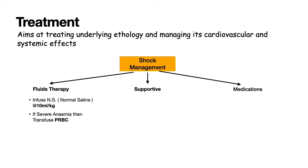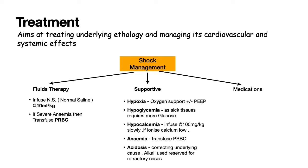Fluid therapy includes infusing normal saline at the rate of 10 ml per kg IV bolus, and in cases of severe anemia, transfusing blood will help. Supportive treatment includes addressing hypoxia, hypoglycemia, hypothermia, hypocalcemia, and acidosis.